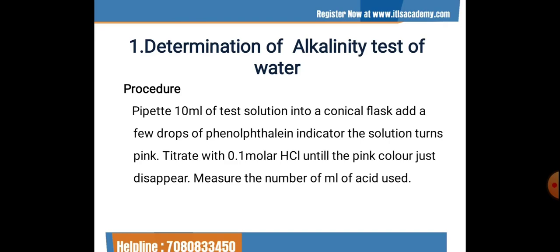The first test is the determination of alkalinity of water. Before going further, let me remind you what titration is. Titration is a quantitative chemical analysis used to determine the unknown concentration of a substance in a sample. The basic principle is that a solution called the titrant or standard solution is added to the sample to be analyzed.